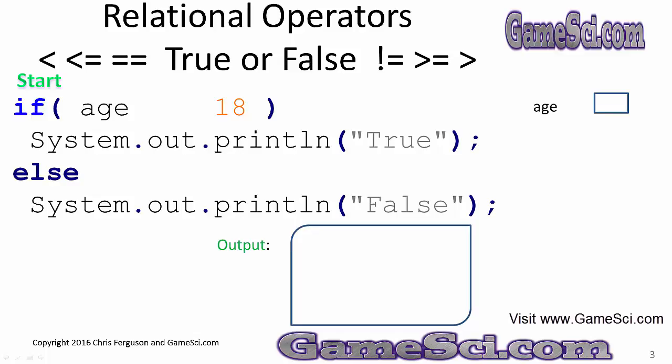Let's take a closer look at what produces the true-false answers. What produces the true-false answers is something we call relational operators. Some of these operators you probably learned in the third grade — things like the less than operator, the less than or equal to operator, the greater than or equal to operator, and the greater than operator.